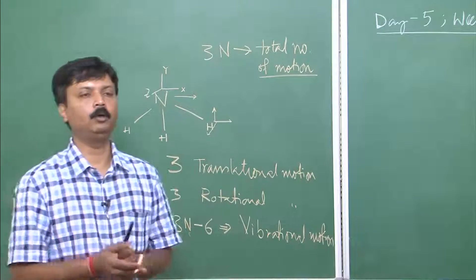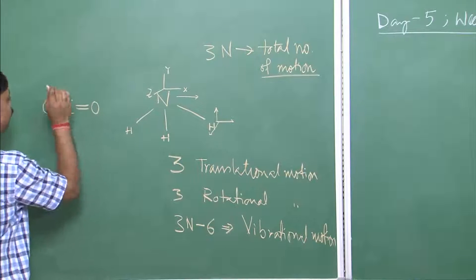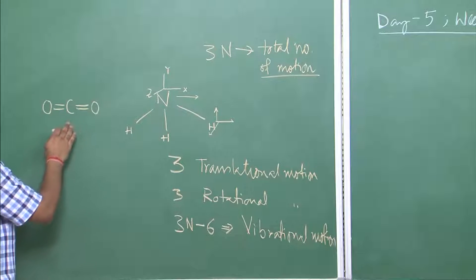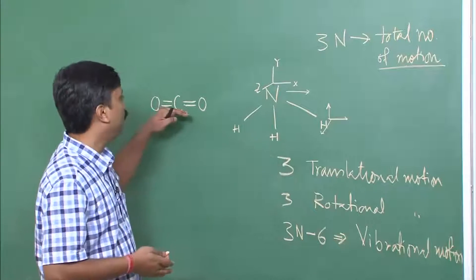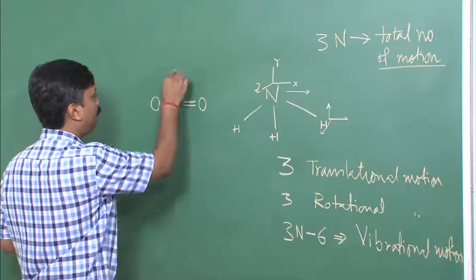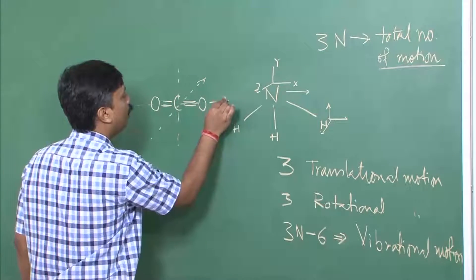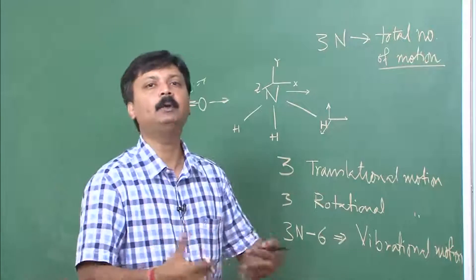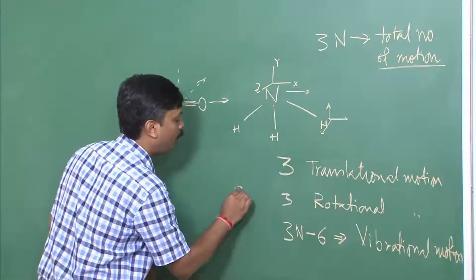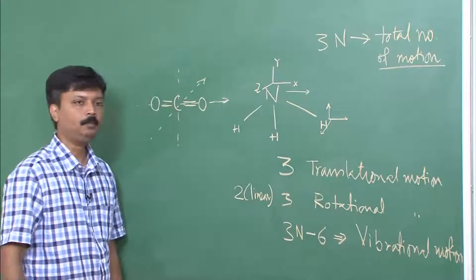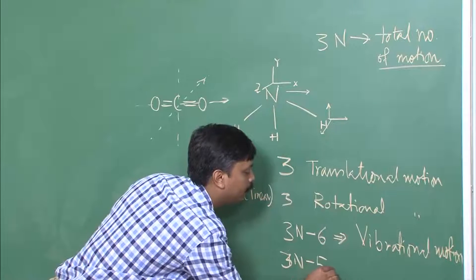This is in general for any non-linear molecule. For a linear molecule such as carbon dioxide, each atom can still translate in x, y, and z, but rotation about the molecular axis has no meaning since all nuclei lie on that axis. So a linear molecule has only two rotational degrees of freedom, and therefore the number of vibrational degrees of freedom is 3n minus 5 for linear molecules.